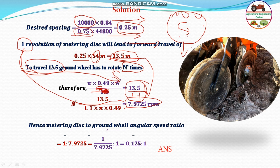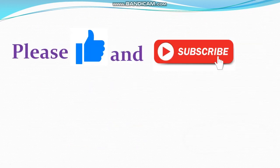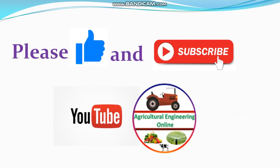This is the angular speed ratio between the metering disk and the ground wheel. Hope you understand — please like and subscribe to my channel. Thank you.